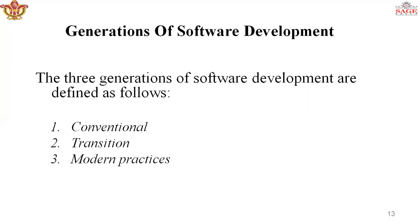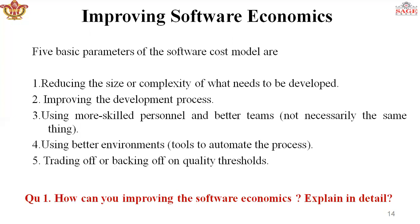Now we discuss improving software economics. There are five parameters for improving software cost models: first, reduce the size or complexity of what needs to be developed; second, improve the development process; third, use more skilled personnel and better teams; fourth, use a better environment to develop software; and fifth, trading off or breaking the quality threshold.